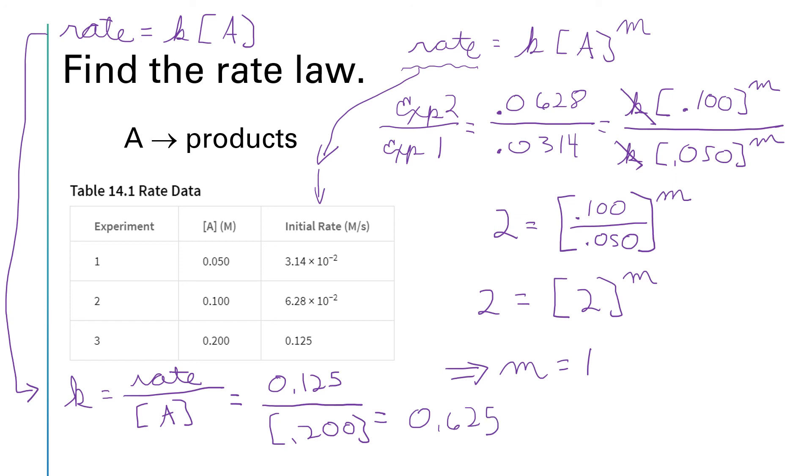So if I run that through my calculator, I'll have 0.125 divided by 0.2, which is 0.625. And the units on this are going to be—well, let's see—the rate was molarity per second, and we divided by molarity, so that's going to leave us per second or seconds to the minus one power.